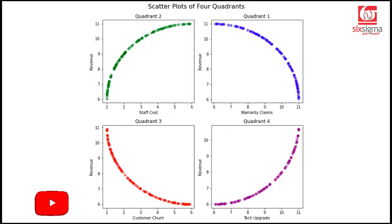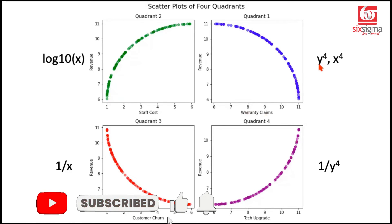So let's apply some transformations. To this quadrant, we applied a transformation, which is y raised to the power of 4 and x raised to the power of 4. We can start with 2 and we can try higher powers. Similarly, to the second quadrant, we had two choices. We could have applied log x or 1 over x. We applied log 10 x. 10 is nothing but the base of the log. If we don't write anything, it will be base e, which is 2.718.